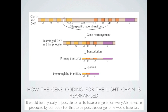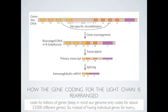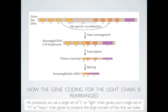It would be physically impossible for us to have one gene for every antibody molecule produced by our body. For that to be possible, our genome would have to code for billions of genes, but our genome only codes for about 23,000 different genes. So instead of having individual genes for every antibody produced, we use a single set of L, or light chain genes, and a single set of H, or heavy chain genes, to produce the large number of antibodies that we make.